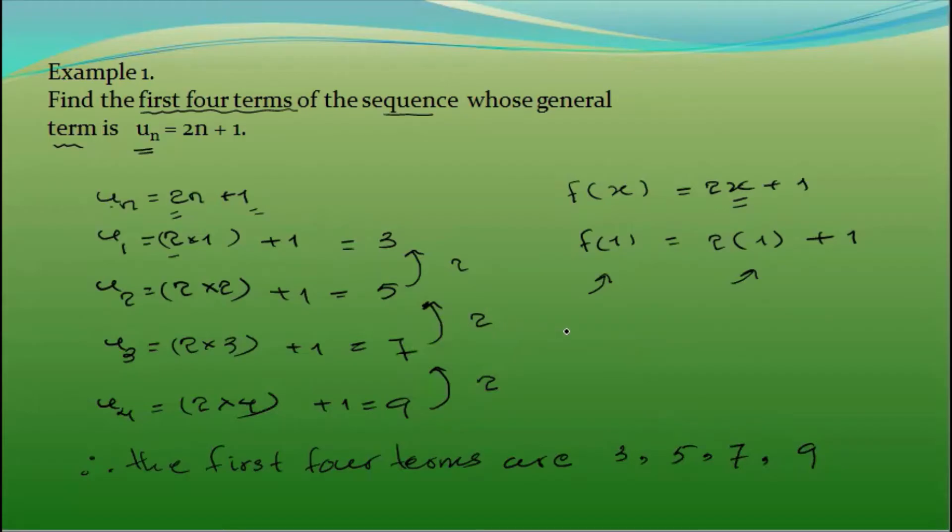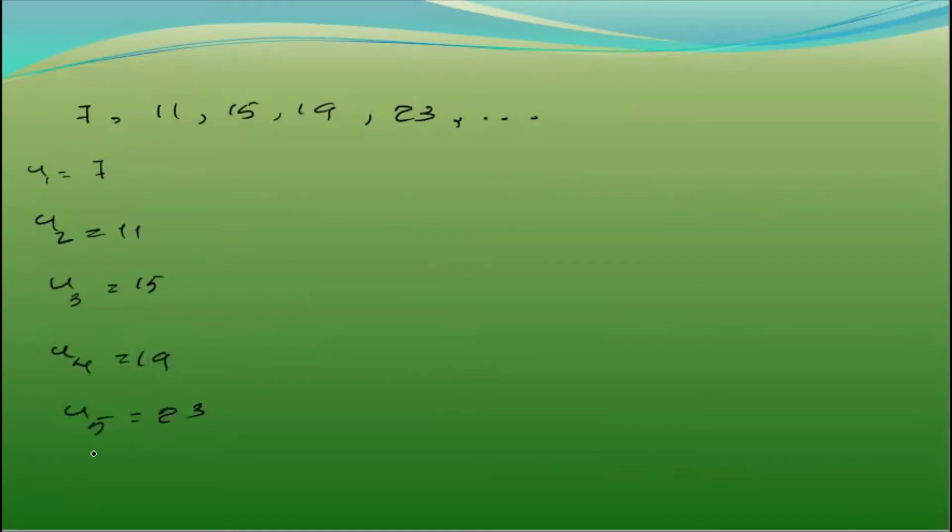So let's take a look at the example of the UN formula. The sequence is 7, 11, 15, 19, 23. Let's take a look at the UN formula: U1 = 7, U2 = 11, U3 = 15, U4 = 19, U5 = 23.